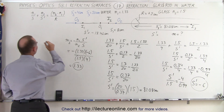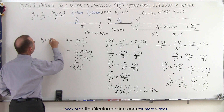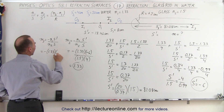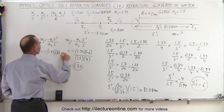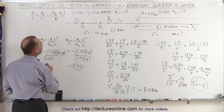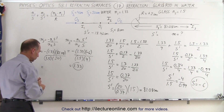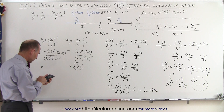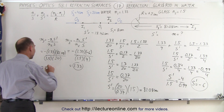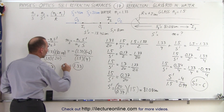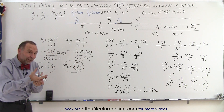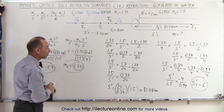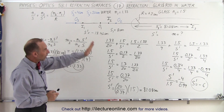For the magnification of the third image, that's going to be minus N1 times S prime over N2 times S. In this case that equals minus 1.33, with S prime now being a positive 81.08, divided by N2 which is 1.5, divided by S which is 20 centimeters. Using a calculator: 1.33 times 81.08 divided by 1.5 divided by 20 gives a magnification of negative 2.7. So in this case the image is going to be upside down and 2.7 times larger than the object.